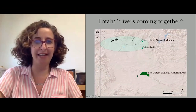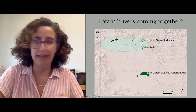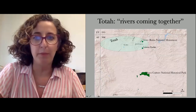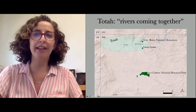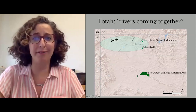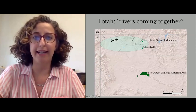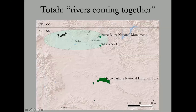Moving back up to Aztec: here's a map. Up in the left-hand corner is the four corners — you're looking mostly at New Mexico, Colorado, Utah, and Arizona. The region where Aztec is has been called the middle San Juan. I like the word 'Tota,' a Navajo word meaning 'rivers coming together,' because three rivers meet there: the San Juan, the La Plata, and the Animas, all coming together near Farmington. Aztec is just a bit to the east and is due north of Chaco Canyon, about 60 miles away.